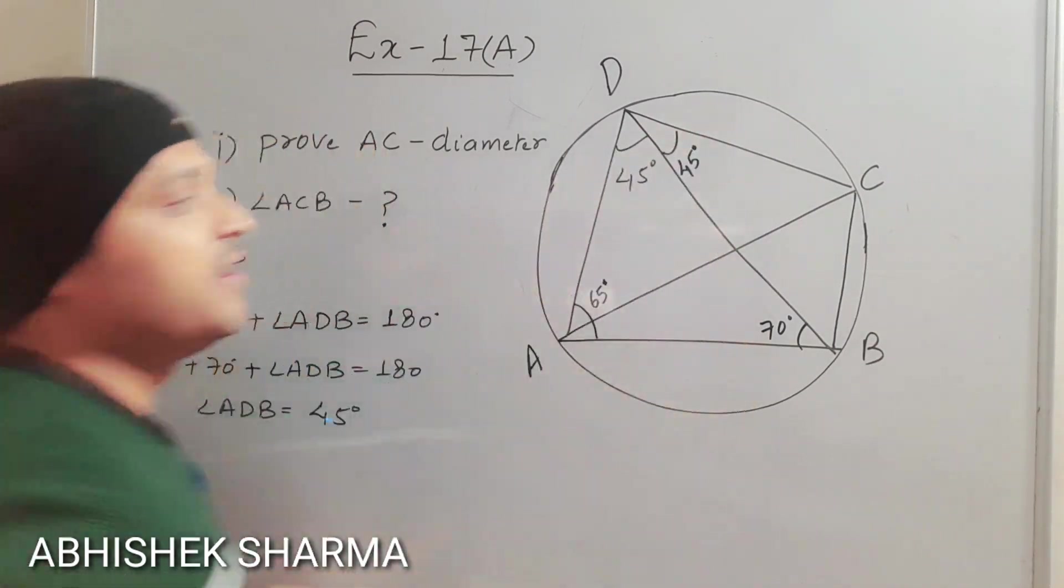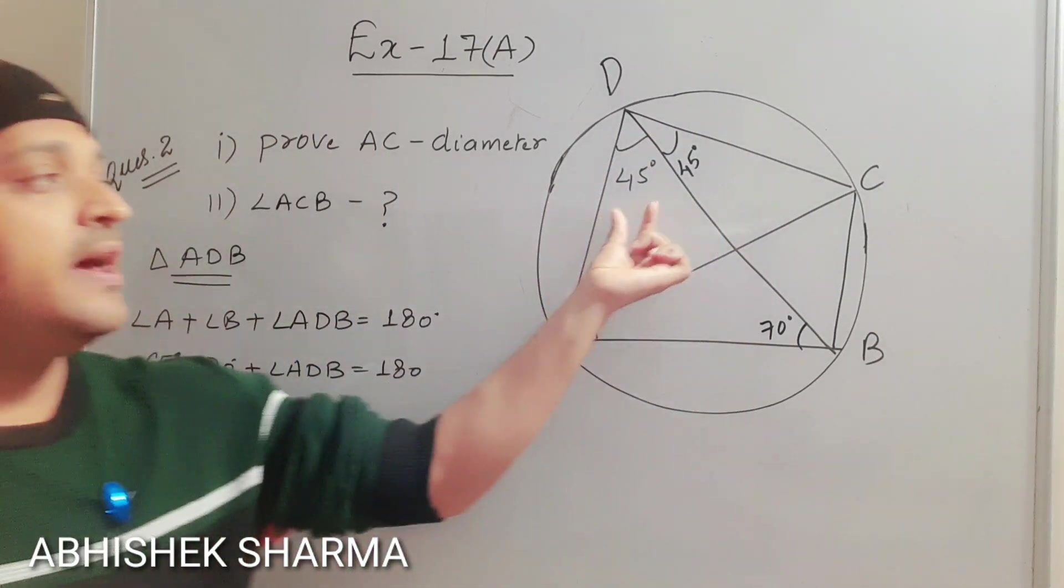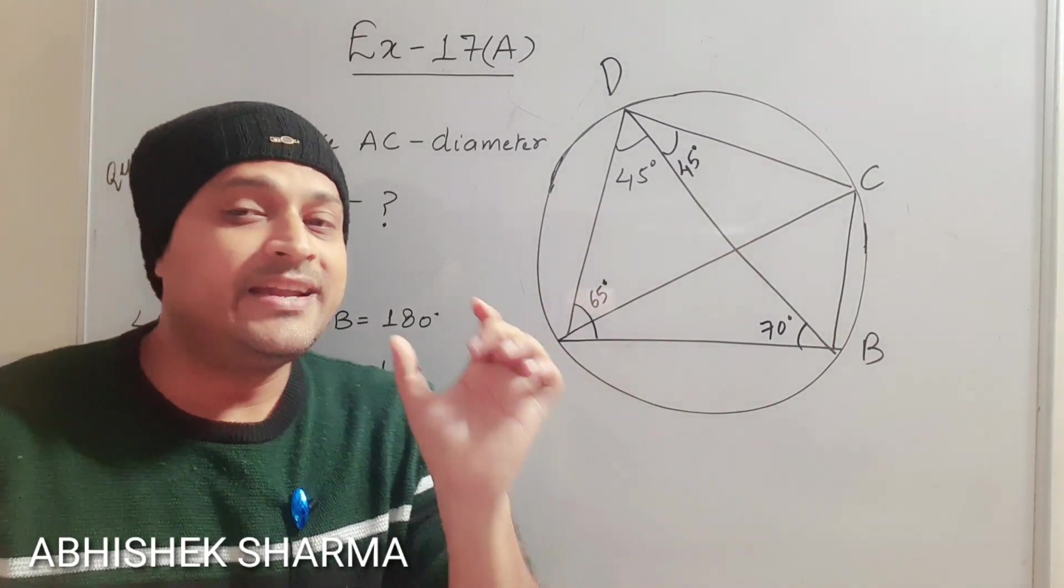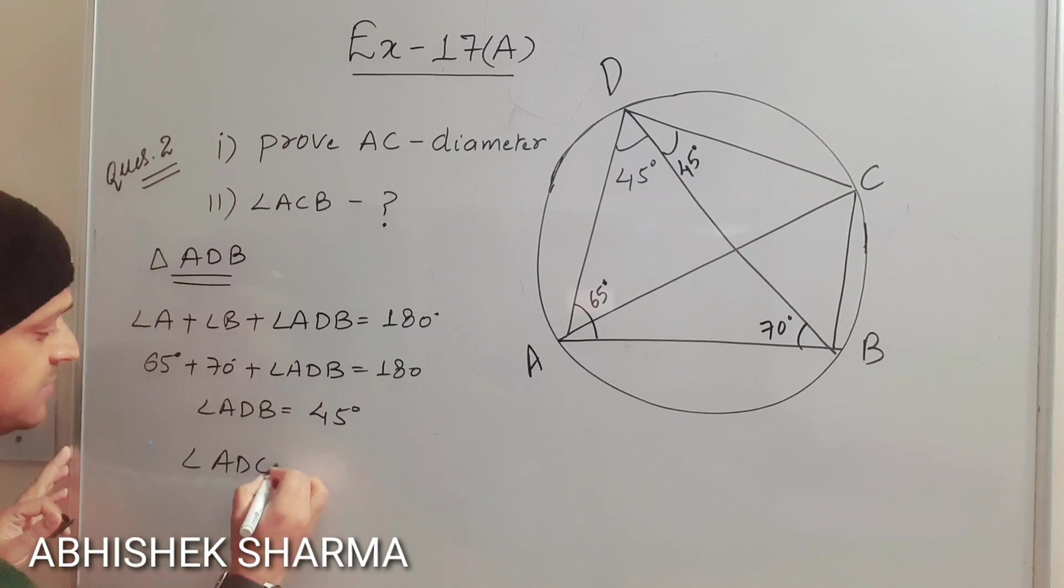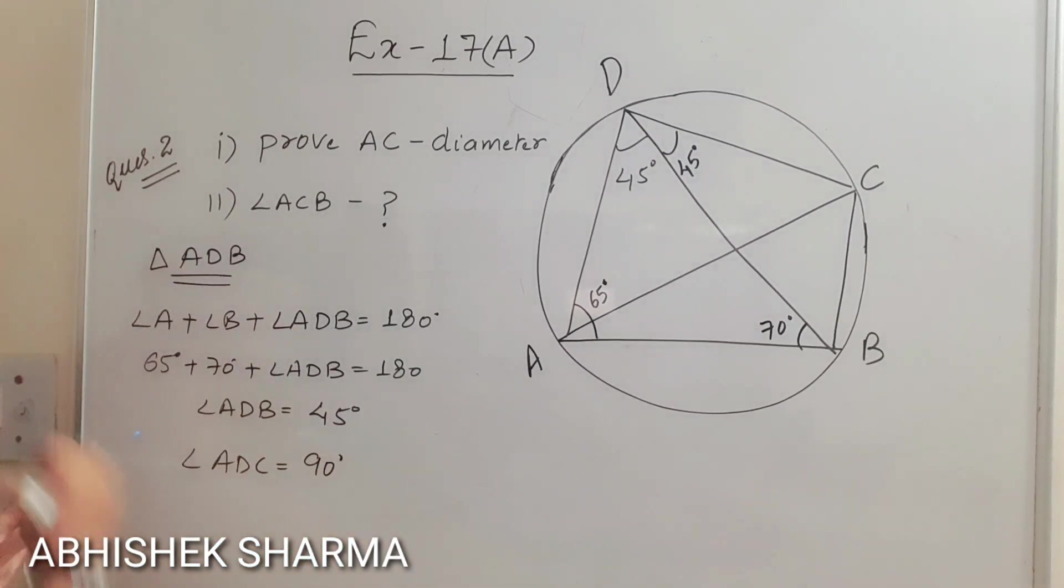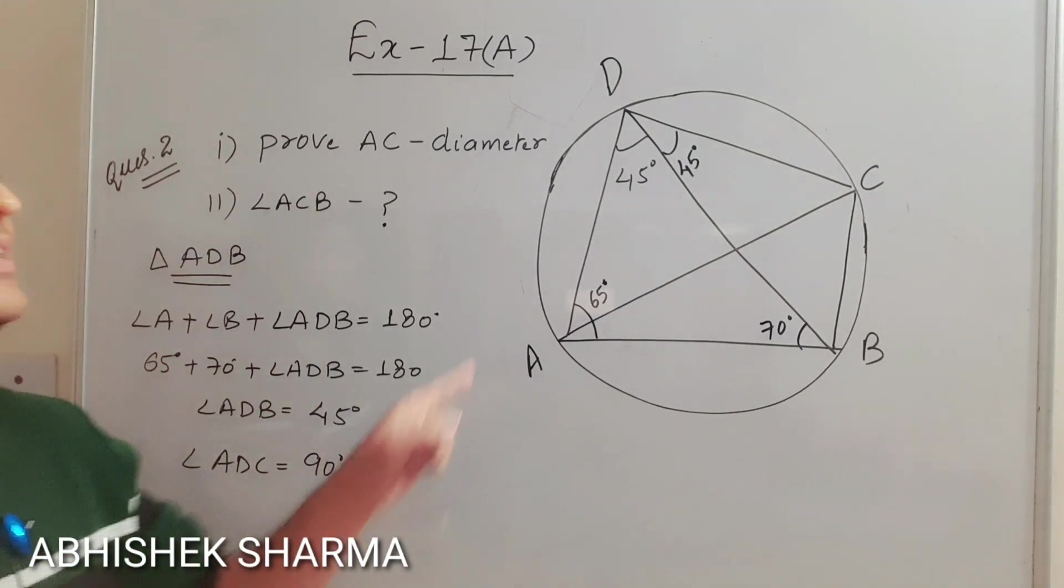So now this is 45 and that is 45. So complete angle, complete angle I am saying ADC is what? 45 plus 45 is 90 degrees. So when ADC is 90 degrees.